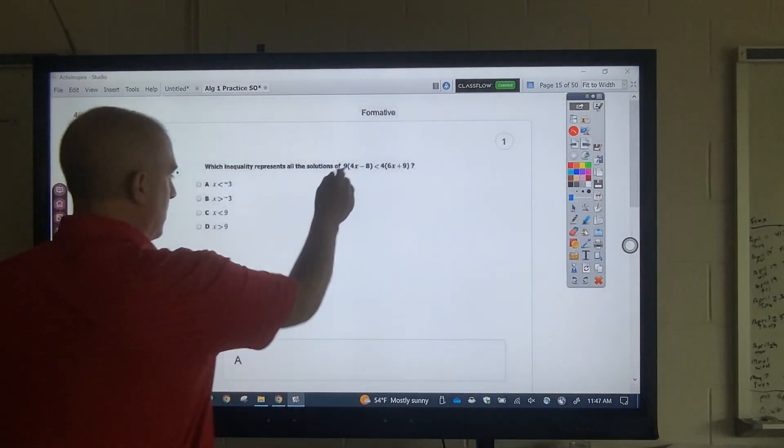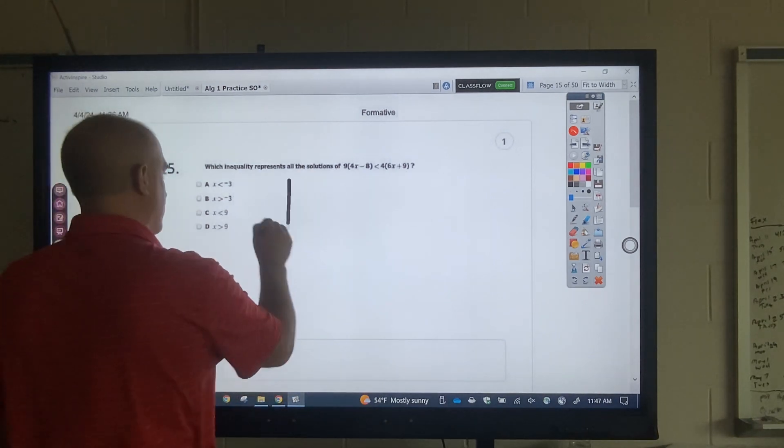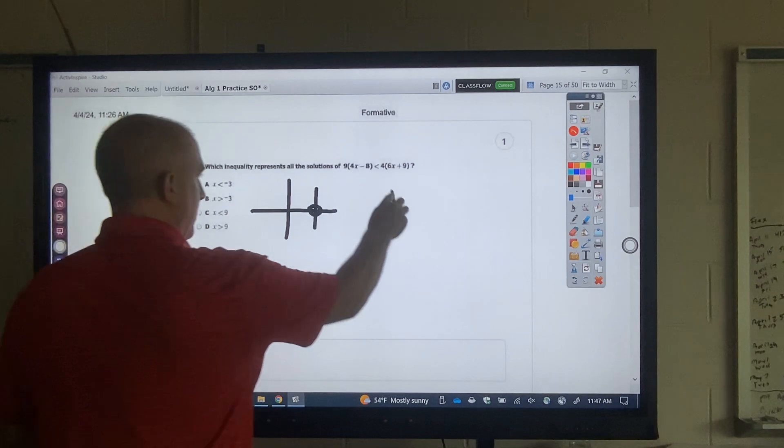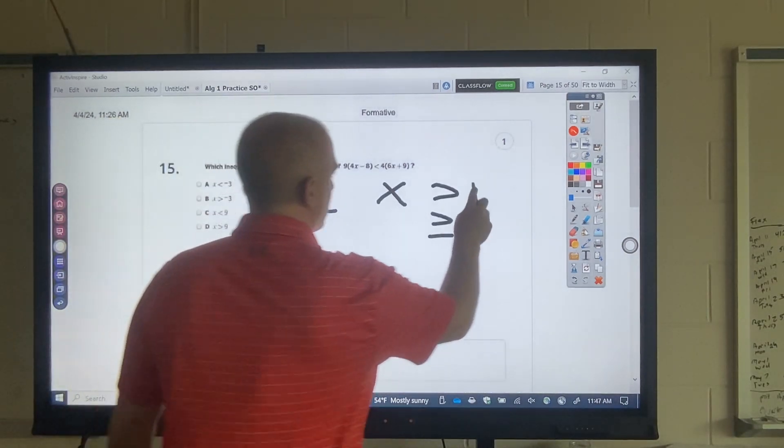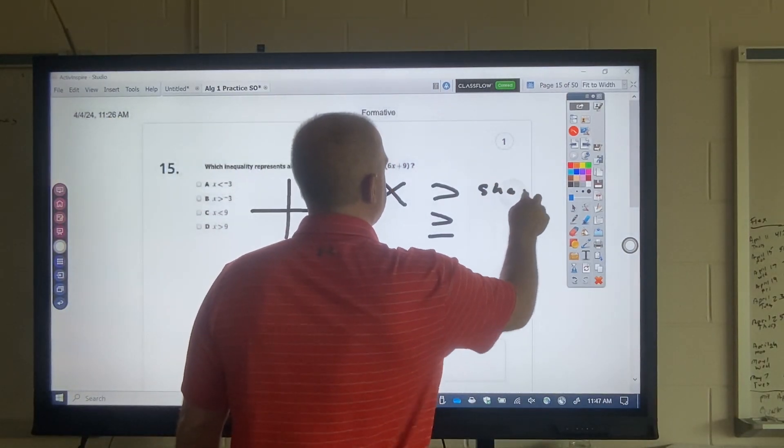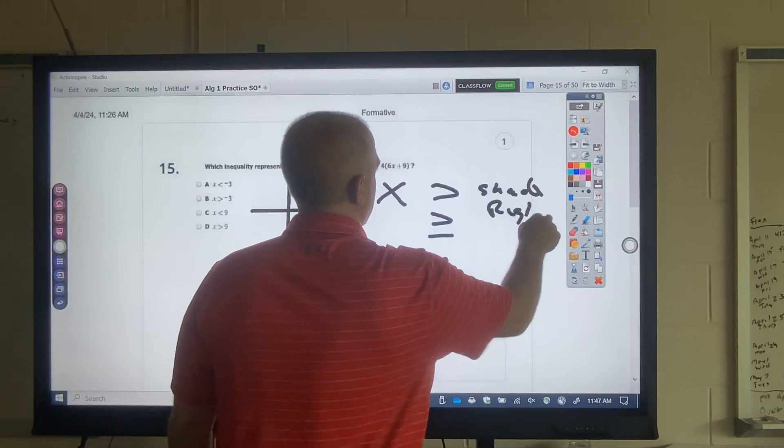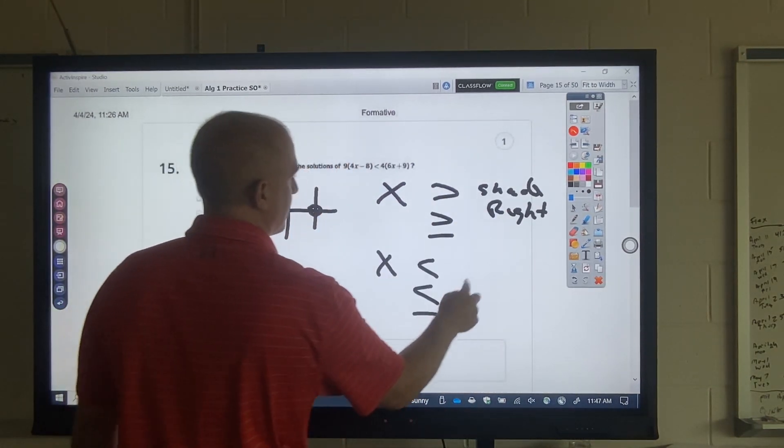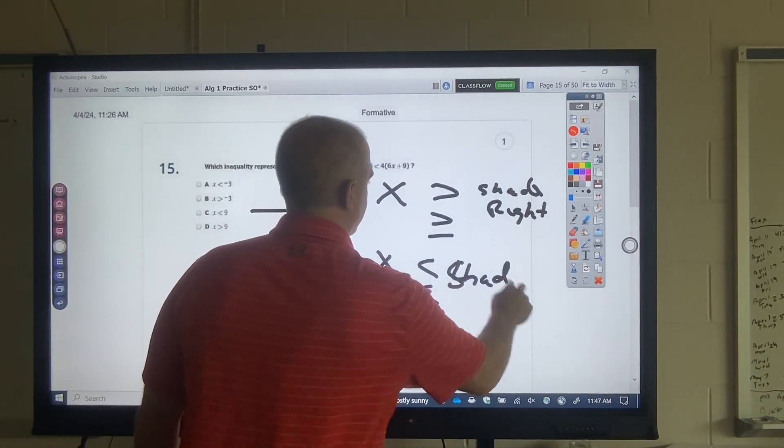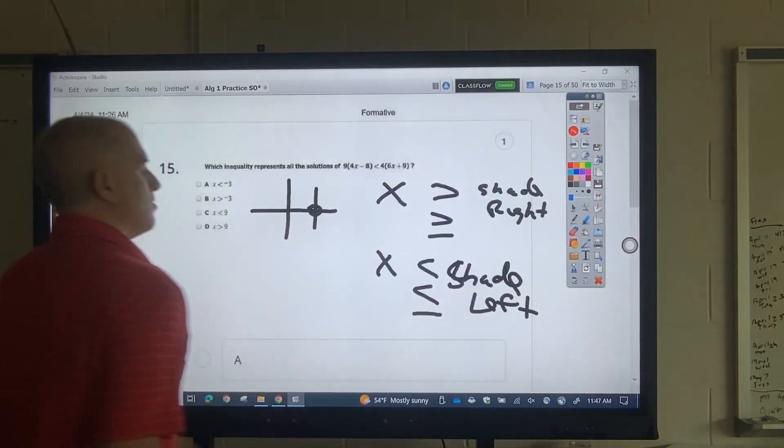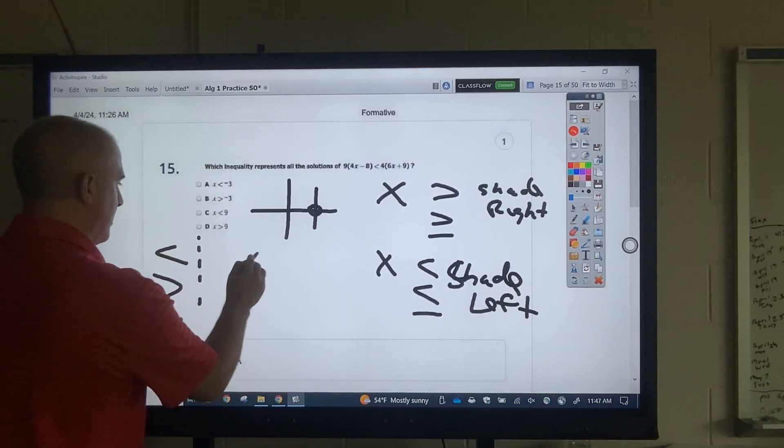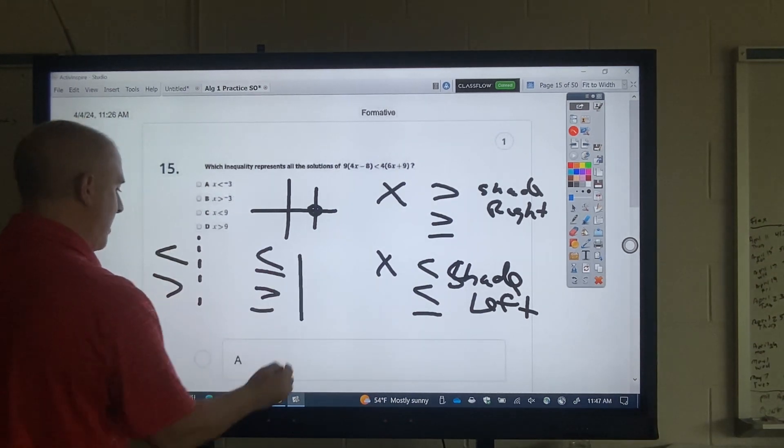Inequalities. Same deal. Okay. What you're looking at is where does it cross the x-axis at? Now, here's what's important. Greater than or greater than equal to, it's going to be shaded right. Think about greater r. Okay. Less than or less than or equal to, all right, shade left. Okay. You also have to watch this. These will be a dashed line. These will be a solid line.